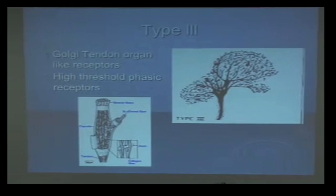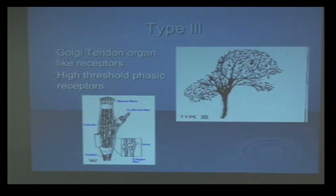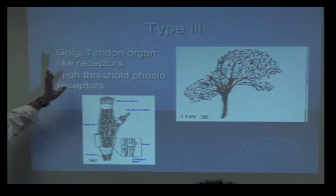Type 3 mechanoreceptors are basically GTOs, Golgi tendon organs. They're in series in the tendon and these guys' job are basically to inhibit the muscles around them and they're high threshold. We'll talk about those in a little more detail in just a little while.